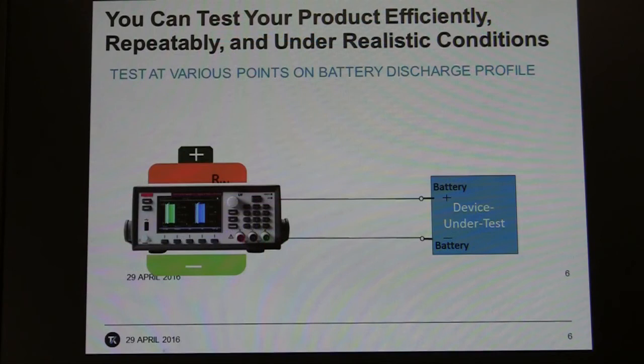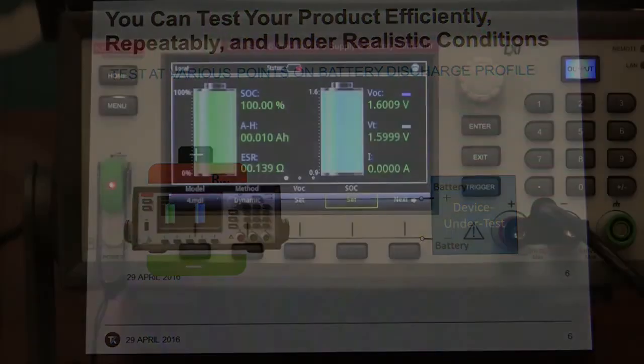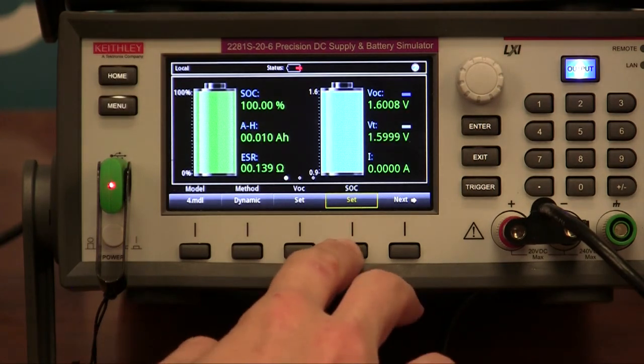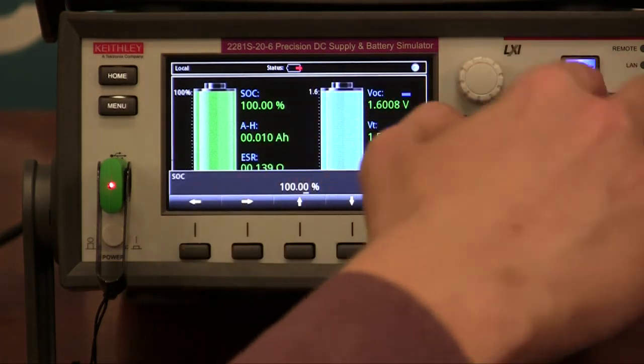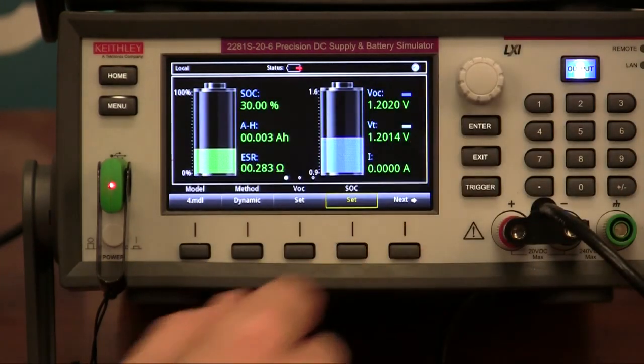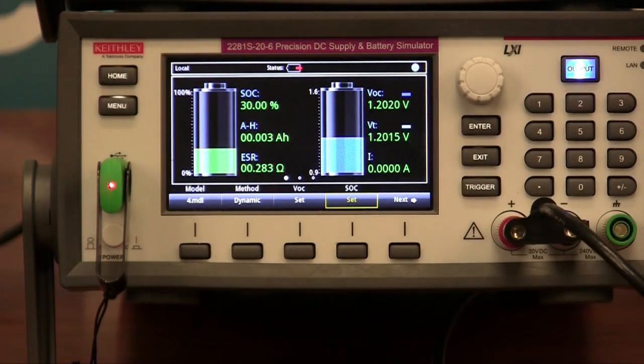So now that you have the model loaded into the 2281S, you can use that model to test your device. With the model loaded into the 2281S, you can efficiently and repeatably test at any state of the device. For example, I can come in here and set the state of charge of the battery to 30%. And now the 2281S will represent a 30% charged battery.